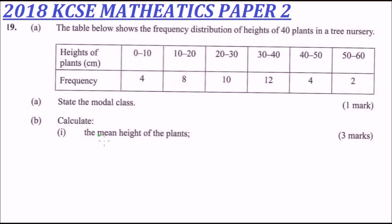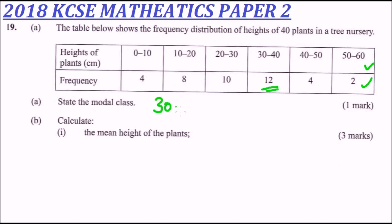This is the 2018 KCSE Mathematics Paper 2, on the topic of statistics. The table shows the frequency distribution of heights of 40 plants in a tree nursery, with height ranges from 0 to 10 up to 50 to 60, where the frequency is 2. The first question asks us to state the modal class — that is the class with the highest frequency. Checking the table, the modal class is 30 to 40.